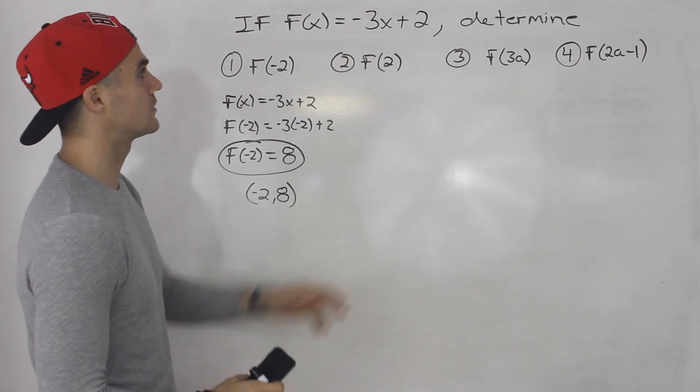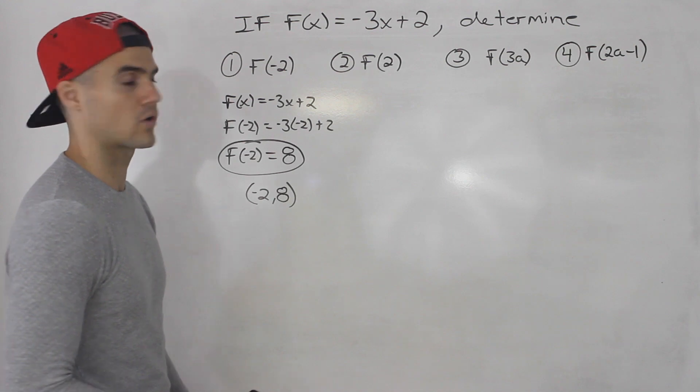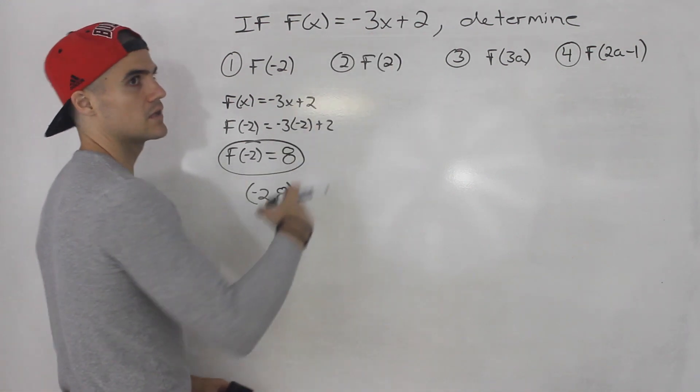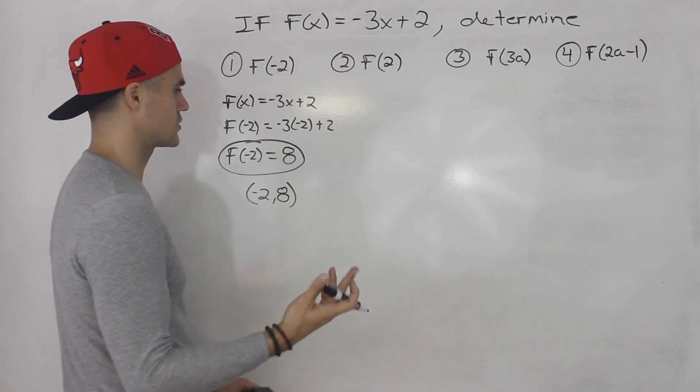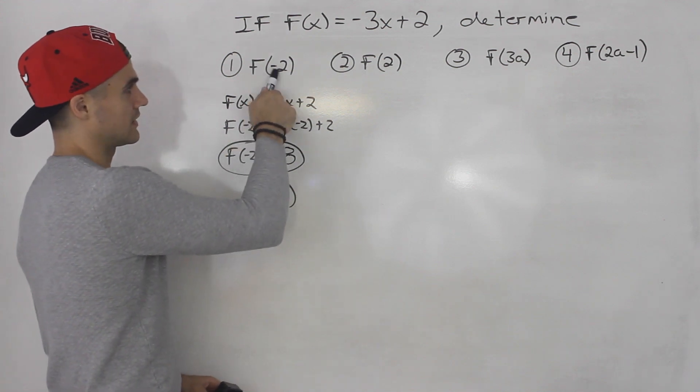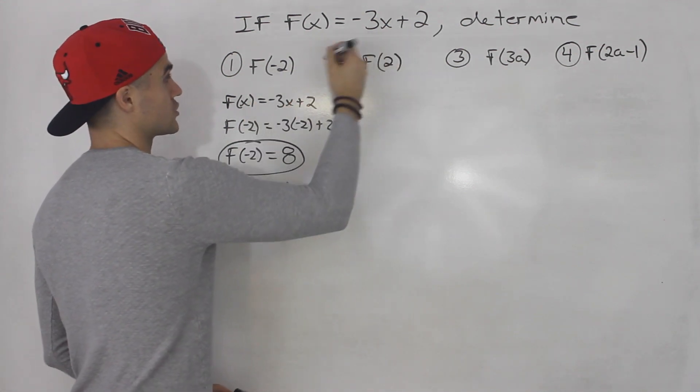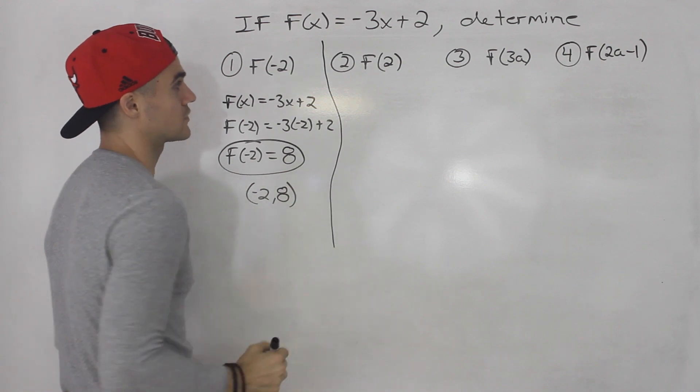This function here is a line. Notice how it's y equals mx plus b form. But this could be anything. It could be a quadratic, it could be an exponential. Basically, you're just plugging in these values for whatever the function is, for x in the function.